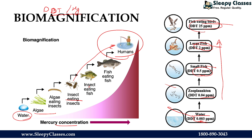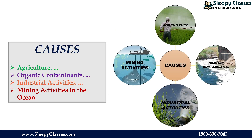What are the causes of biomagnification? First is agricultural causes. Insecticides, pesticides, fertilizers, and herbicides are used in agriculture. These contain harmful heavy metals in very small amounts, such as mercury, arsenic, cadmium, copper, and lead. When these chemicals enter aquatic ecosystems, their concentration consecutively increases, leading to biomagnification.